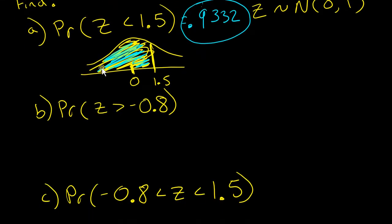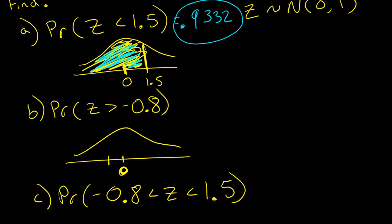Now, find the probability that z is greater than negative 0.8. In the center you always have zero; negative is to the left. So we have negative 0.8 and we want the area to the right of negative 0.8. Your calculator always finds a cumulative probability, which is the area to the left.